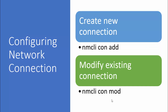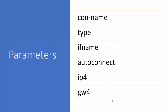You will be required to do only two things. Either you create a new connection using `nmcli con add`, or if you want to modify an existing connection, you use `nmcli con mod`. These are the only two commands you need to understand. There are certain parameters you will use with either of these commands, and I will show you the important ones.